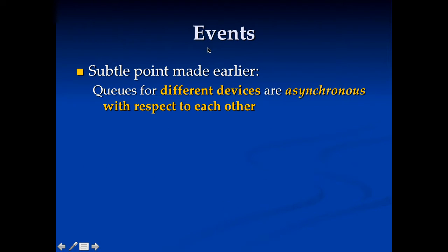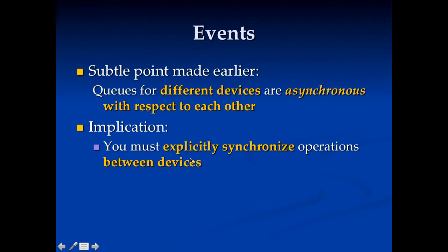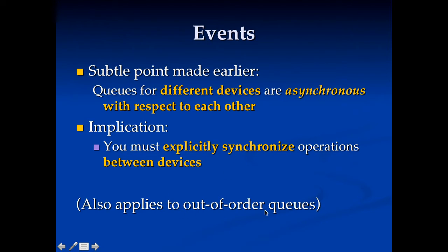The last topic is events. Queues for different devices are asynchronous with respect to each other, so if you have multiple devices, you have to synchronize between them because one device may progress through its queue faster or slower than the other. This also applies to out-of-order queues — usually when you create an OpenCL queue it's in order, but you can create out-of-order queues which allow the hardware to reorder things for speed. If you need to enforce ordering with an out-of-order queue, you need to be explicit about that using events.